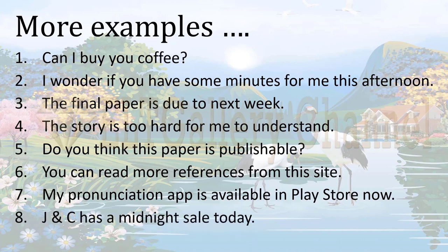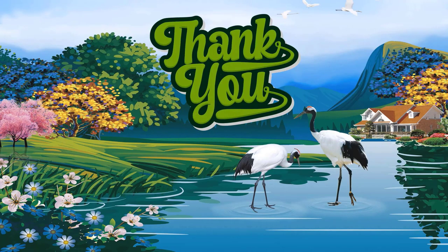Finally, 'GNC has a midnight sale today' — it depends on the relationship of the addresser and the audience. If said by a wife to a husband, then probably it's a request: 'Can we go to the sale tonight?' But if said between two girls, it probably only gives information. From all these examples, what we can say is that whether a clause expresses a commodity of goods and service or a commodity of information depends on who the addresser is, who the audience is, and on their relation. That's all about commodity and the interpersonal meta function. Thank you.